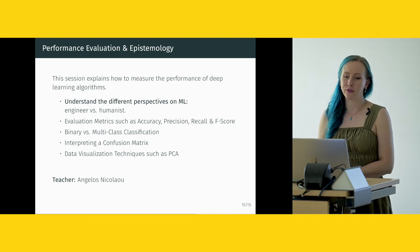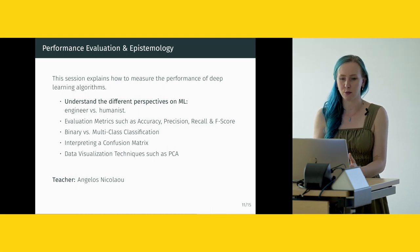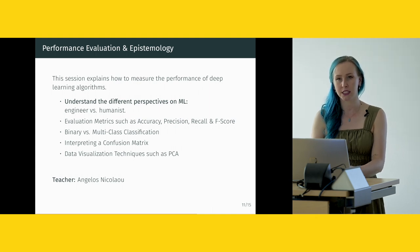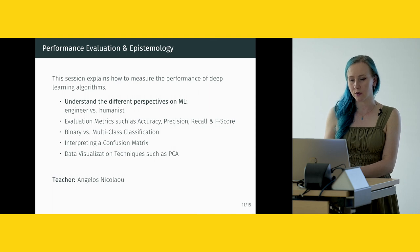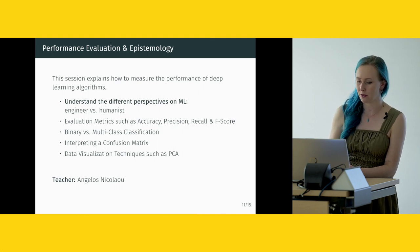The second lecture is on performance evaluation and epistemology. In the humanities it doesn't suffice to just know how to run a model — you need to understand what's happening, both from the engineer's perspective (what is the method doing, how can we improve it) and whether it makes sense with the data. We will see different perspectives from the engineer and the humanist, evaluation metrics such as accuracy, precision, recall, and F-score, binary versus multi-class classification, how to interpret a confusion matrix, and data visualization techniques such as PCA (principal component analysis).